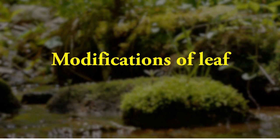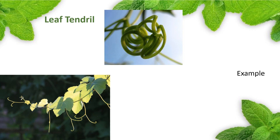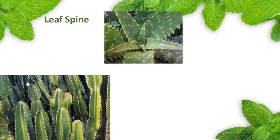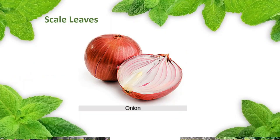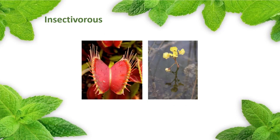Modification of a leaf — sometimes the entire or part of the leaf is modified to perform special functions. 1. Leaf tendril — in some weak-stemmed plants, the leaf is modified into a tendril which helps the plant in climbing. Example: sweet pea. 2. Leaf spine — in the leaves of xerophytes, desert plants like cactus, the leaves are modified into spines. The spines prevent water loss during transpiration. Example: Opuntia. 3. Scale leaves — these leaves store food and water and become thick and fleshy. Example: onion. 4. Insectivorous — the leaves of some plants are modified into a bladder or pitcher to trap insects. These plants are called insect-eating or insectivorous plants. Example: Venus flytrap, bladderwort.